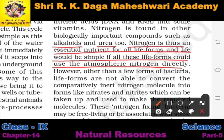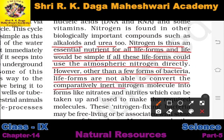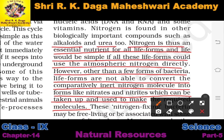However, other than a few forms of bacteria, life forms are not able to convert the comparatively inert nitrogen molecule into forms like nitrates and nitrites which can be taken up and used to make the required molecules. But certain bacteria convert nitrogen into nitrates or nitrites and absorb them. Apart from these bacteria, other living bodies cannot use atmospheric nitrogen directly.